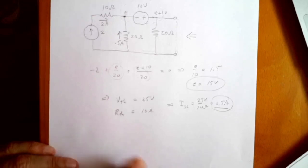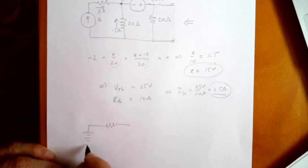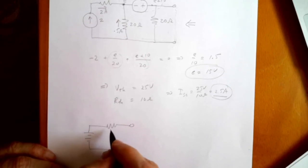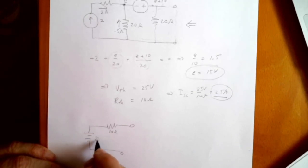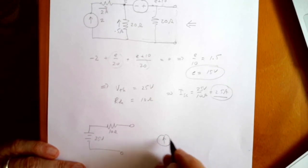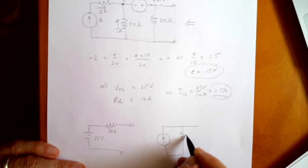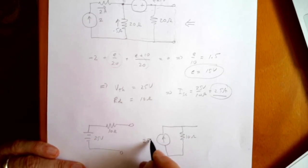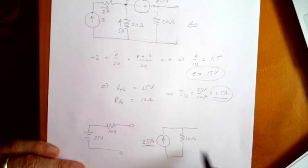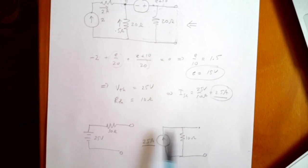So what that means is I could replace this whole circuit with the Thevenin equivalent — just a battery and a resistor. The resistance would be 10 ohms and the voltage would be 25 volts. I could also do a Norton equivalent. The Norton equivalent would have the short circuit current and then the Thevenin resistance — so this would be 10 ohms, and this would be 2.5 amps. That's the same circuit — basically it's the same equivalent. Let's see if that makes sense: if I short it out, I get 2.5 amps. If I open it up, I get 2.5 amps times 10 ohms, which is 25 volts. So that works — and that's all there is to it.